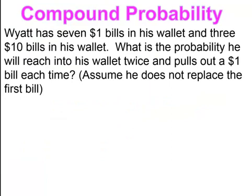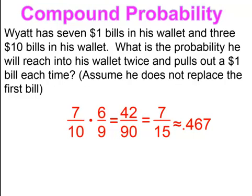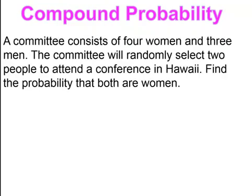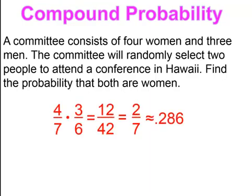Pause and try. You should have gotten 0.467. Pause and try. You should have gotten 0.286.